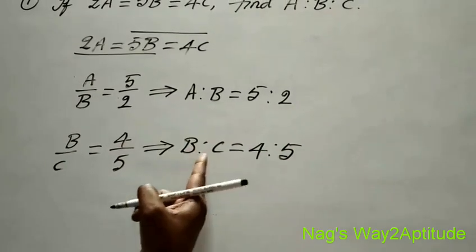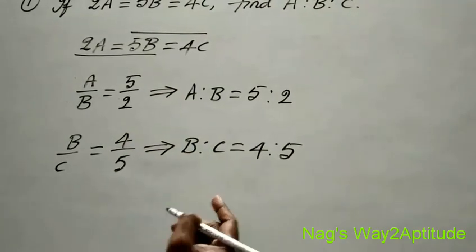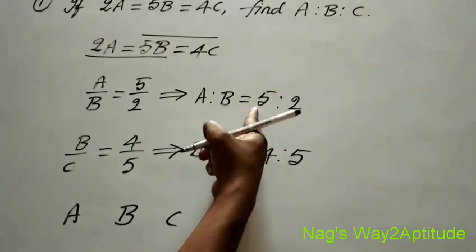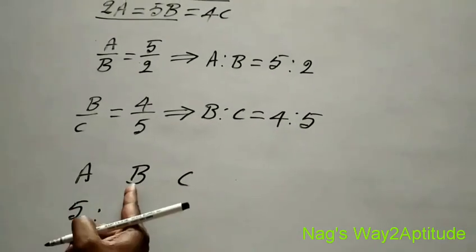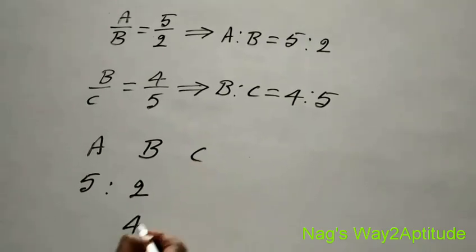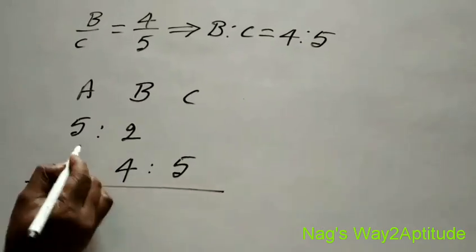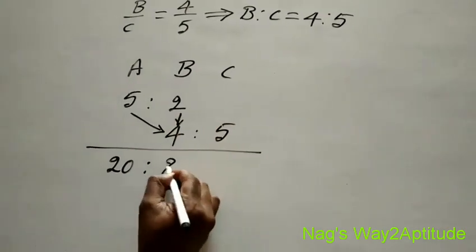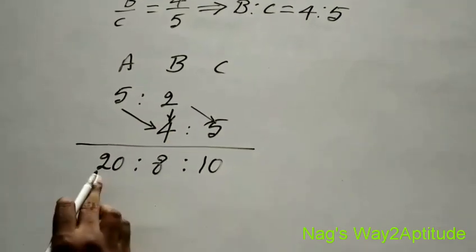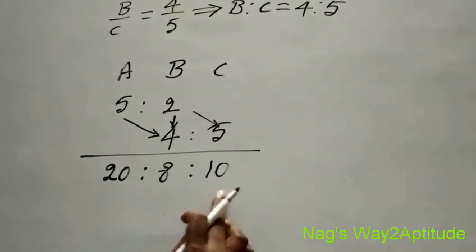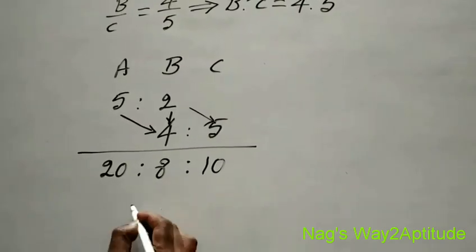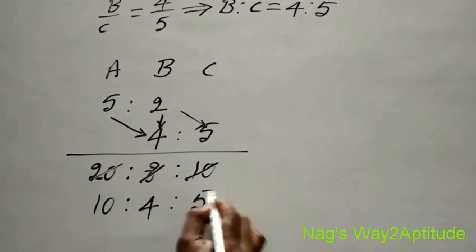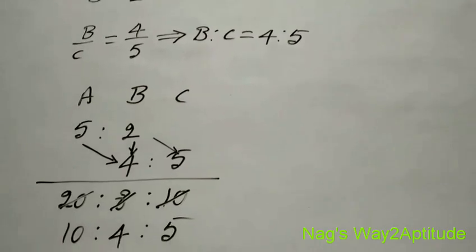Now we have a is to b and b is to c. From these two, we can easily find a is to b is to c. So to find a is to b is to c, we write a, b, c. The values of a and b are 5 is to 2, and b is to c is 4 is to 5. We multiply these two terms: 5×4=20, 2×4=8, 2×5=10. We got 20 is to 8 is to 10. There is a common factor of 2, so cancelling: 20÷2=10, 8÷2=4, 10÷2=5. The answer is a is to b is to c is 10 is to 4 is to 5.